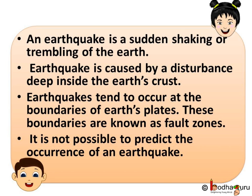To summarize what we learned today: an earthquake is a sudden shaking or trembling of the earth. Earthquakes are caused by disturbance deep inside the earth's crust. Earthquakes tend to occur at the boundaries of the earth's plates, and these boundaries are known as fault zones. Lastly, it is not possible to predict the occurrence of an earthquake.